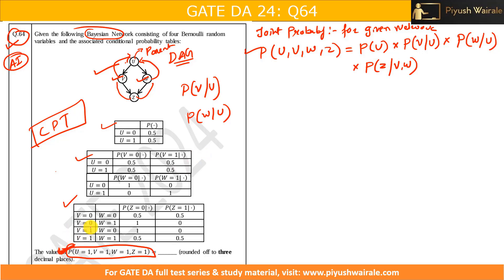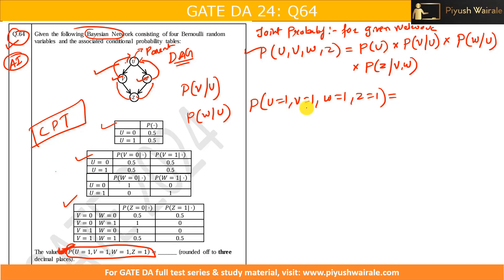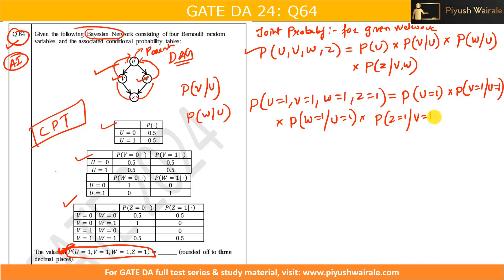We need to find the probability for the condition U=1, V=1, W=1, Z=1. So this becomes: P(U=1) × P(V=1 | U=1) × P(W=1 | U=1) × P(Z=1 | V=1, W=1). We simply substitute the required values. If they ask for V=0 or W=0, you use those values instead.